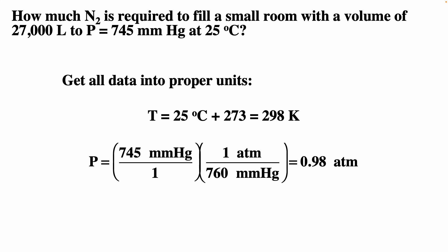How much nitrogen gas is required to fill a small room with a volume of 27,000 liters to a pressure of 745 millimeters of mercury at 25 degrees Celsius? We must get all data in proper units. Temperature must be in Kelvin: 25 plus 273 gives us 298 Kelvin. For pressure, one atmosphere corresponds to 760 millimeters of mercury, so 745 divided by 760 gives us 0.98 atmospheres.